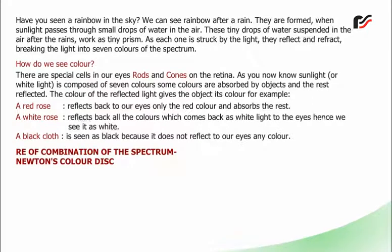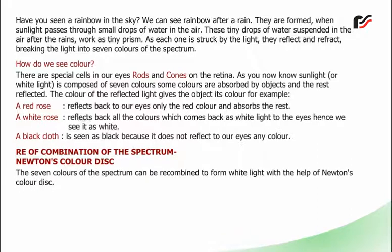Recombination of colors of the spectrum: Newton's color disc: The seven colors of the spectrum can be recombined to form white light with the help of Newton's color disc.